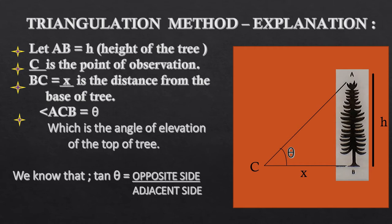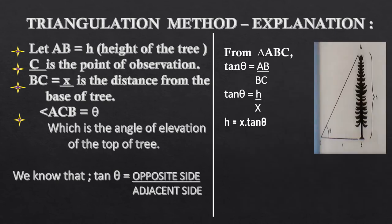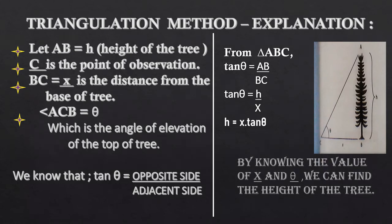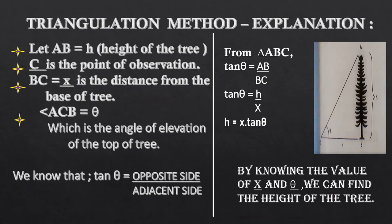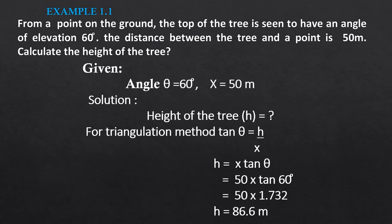The reason we are taking tan theta is we have two values: the opposite side value and the adjacent side value. Now we are going to calculate the height of the tree. From tan theta equals AB by BC according to the figure, so tan theta equals h by x. Cross multiplying, we get h equals x times tan theta. By knowing the value of x and theta, we can conclude the value of h.